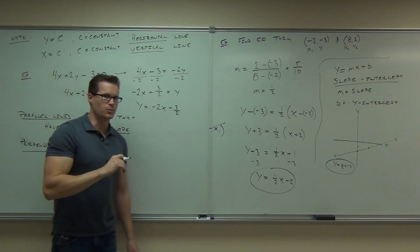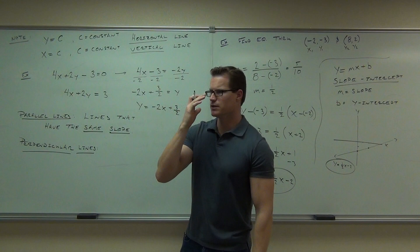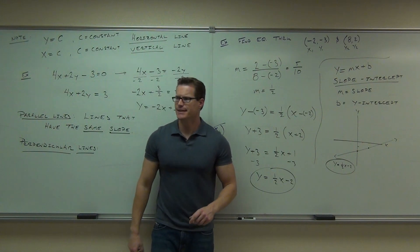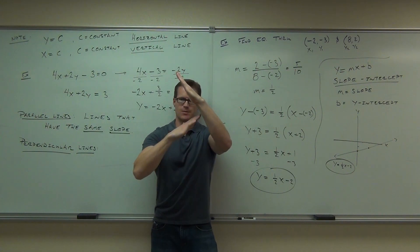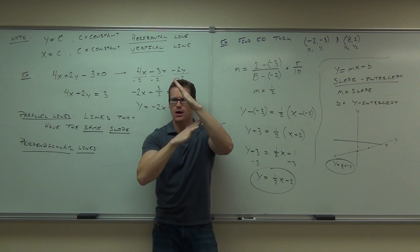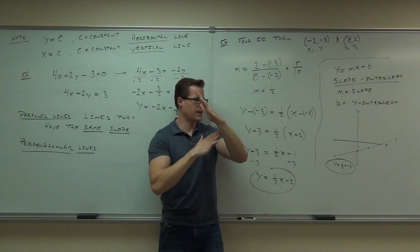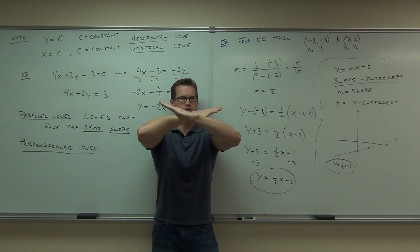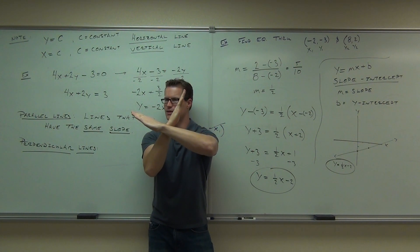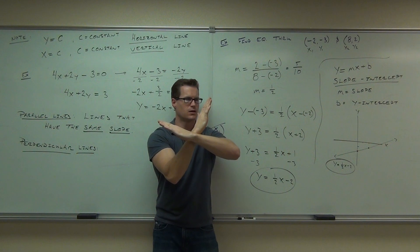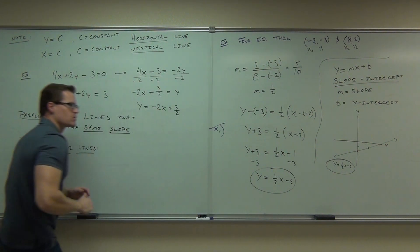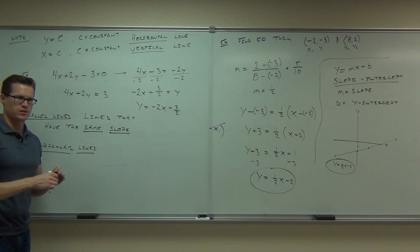Do perpendicular lines have the same slope? No. Perpendicular lines meet at a very specific angle — 90 degrees. So if one line goes this way, the other has to go that way. If one slope is positive, the other slope is negative. But it's not just any negative slope — it also has to be a negative reciprocal. So perpendicular lines are lines where the slopes are negative reciprocals of each other.